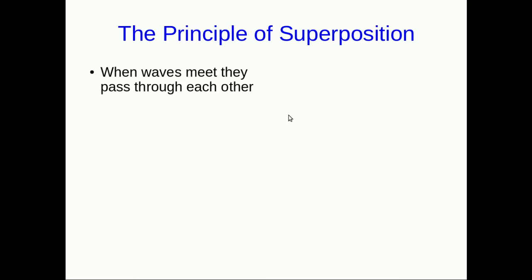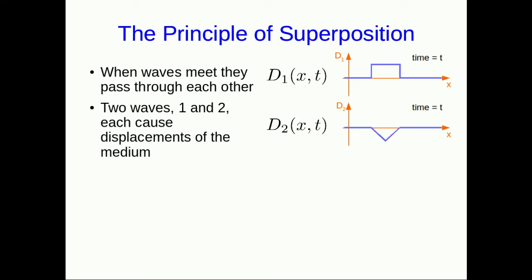What we have just seen on the wave machine is what is called the principle of superposition. So first of all, when waves meet they pass right through each other. But as they're passing through, they add together so that the total displacement of the medium can be found from the individual displacements of the two waves that are meeting.